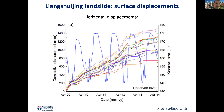To better understand this, we split the reservoir level variation into five categories based on the typical annual cycle. Each line corresponds to a different year. The pattern is consistent: a period of drawdown in winter, followed by rapid drawdown in spring, the level remaining low in summer, then rising in fall and staying high through winter. This is the main annual reservoir cycle.